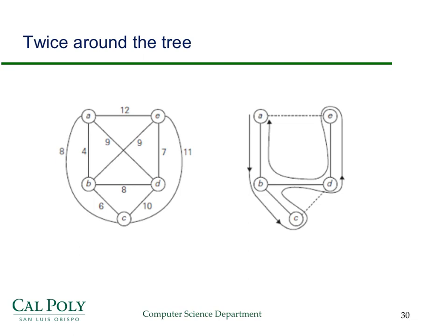Now we find the shortcuts. When we're at C and try to go back to B, B has already been visited, so we skip to the next unvisited node along the path and use that shortcut edge. Continuing, when we reach E, D has already been visited, B has already been visited, so we go directly back to A, which is the starting vertex and hasn't been revisited on the path. The approximate tour is the result of applying these shortcuts.